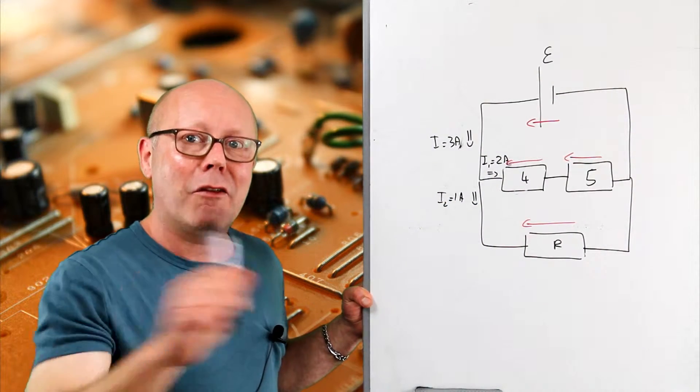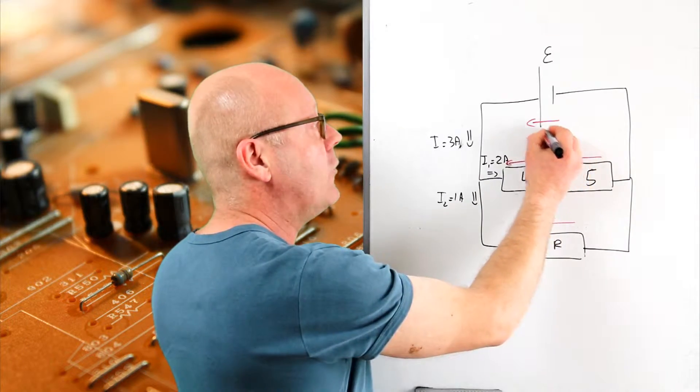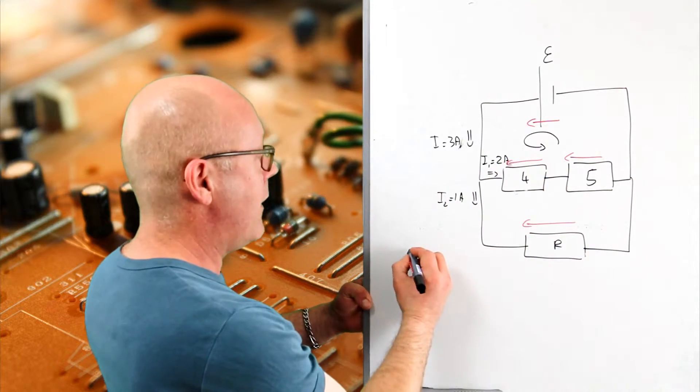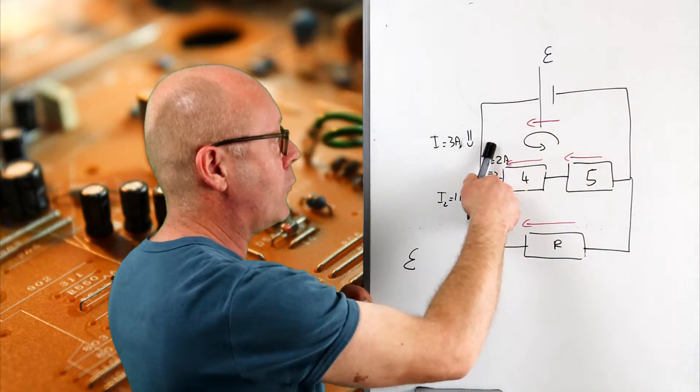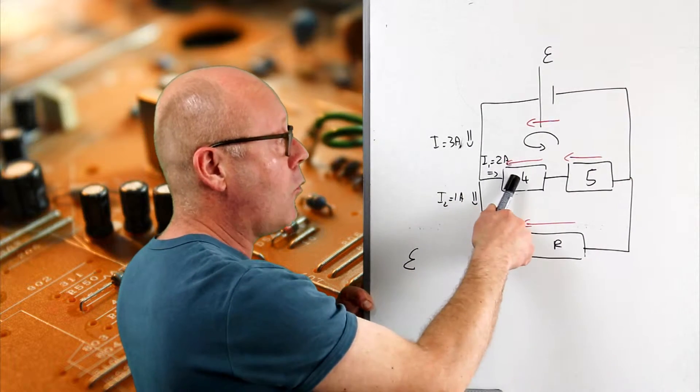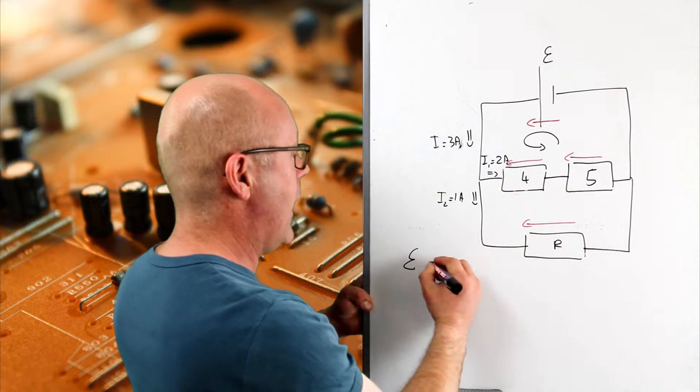Now I get to use the second law because I want to find the EMF. So I'm going to consider this loop. The EMF will be Epsilon. I travel around the loop and I meet a resistor with a potential drop equals to Ri, so 4 by 2, 8V.